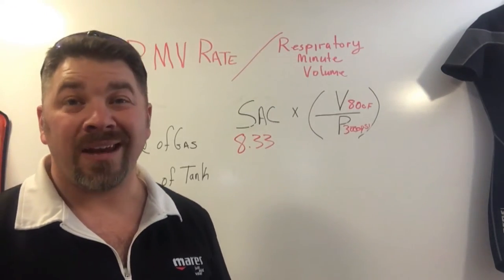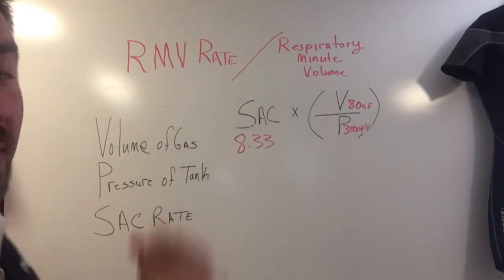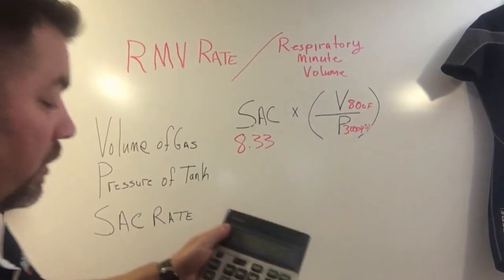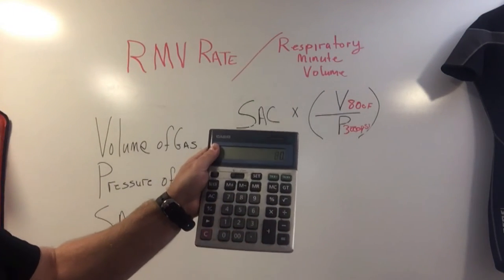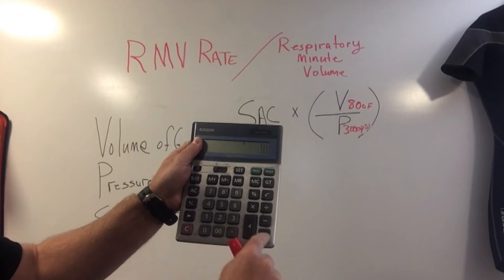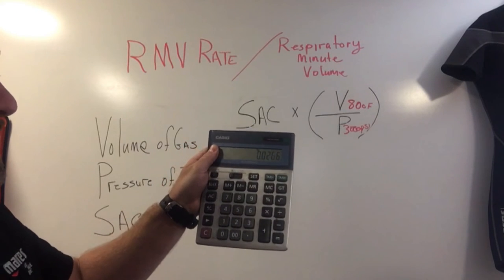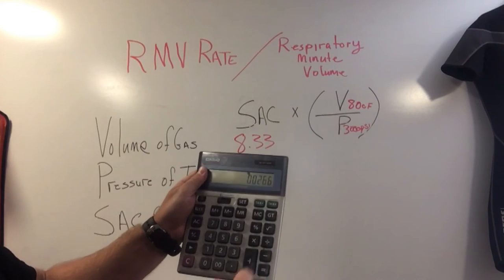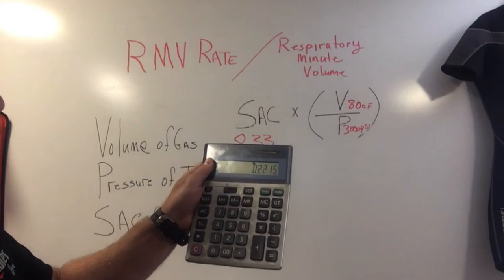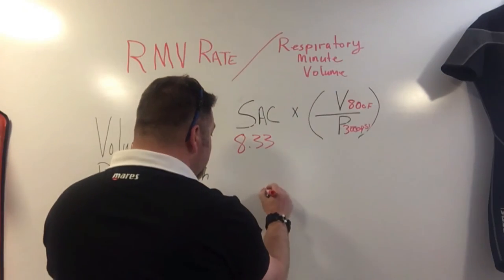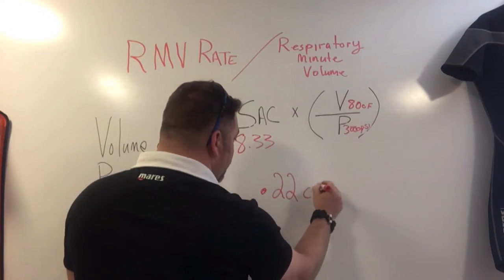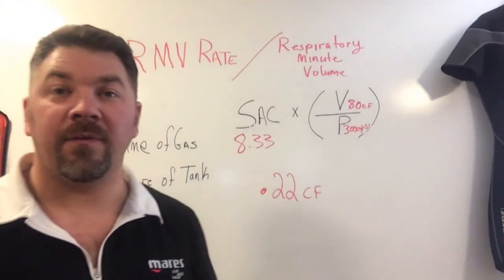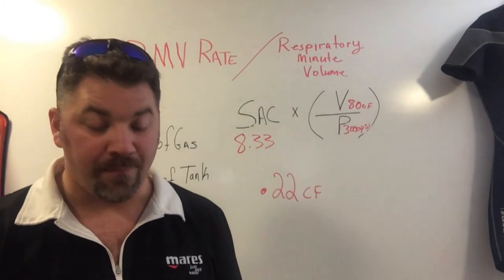With these three variables it is very easy to calculate his RMV rate, or how much cubic feet of air he is breathing per minute. We calculate what's within the parentheses first, then multiply by our SAC rate. We take the volume of air — 80 cubic feet — divide that by 3,000, which comes out to 0.0266. Then multiply by the SAC rate of 8.33, and that gives a cubic footage of 0.22.